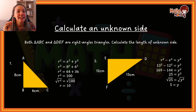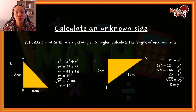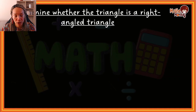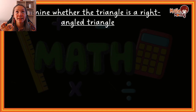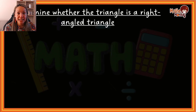Take a moment — if you're not sure how this works, go back and start over from example one until you understand how to calculate an unknown side. Now I'm going to move over to the next type of question: determining whether a triangle is a right angled triangle.